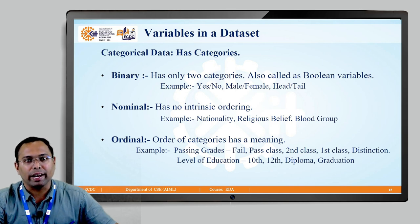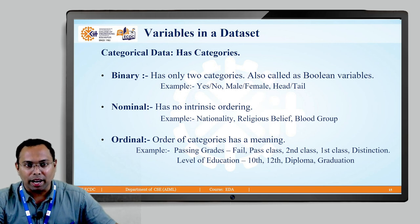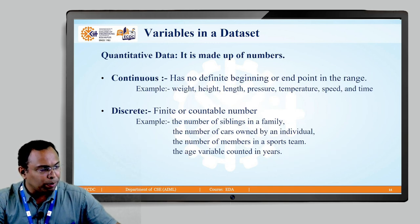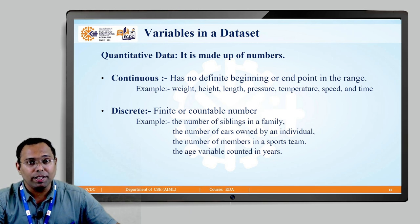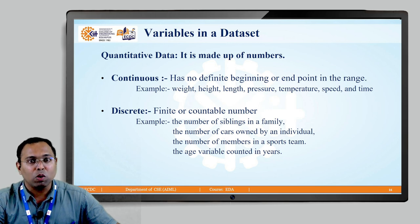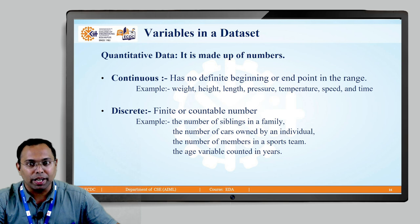In ordinal categorical variables, the variable values have categorical meaning only when a specific ordering is followed. In this slide we have seen the three different categorical variables: binary, nominal, and ordinal. Now let us go ahead and see the second type of variables — quantitative variables. As the name suggests, in these types of variables we are talking about a quantity, which means we are talking about numbers.